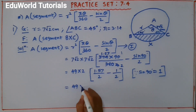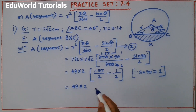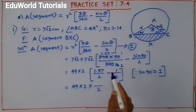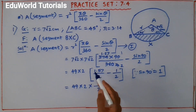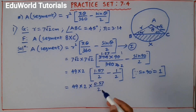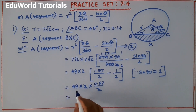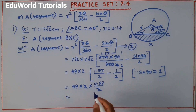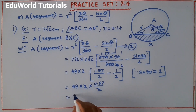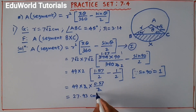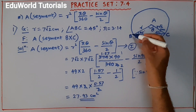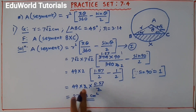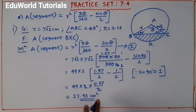Since the denominators are the same, we directly subtract: 1.57 − 1 = 0.57, so the bracket gives 0.57/2. The 2s cancel, leaving 49 × 0.57. Multiplying 49 by 0.57 gives 27.93. Therefore, area of segment BXC = 27.93 cm².